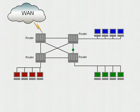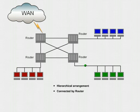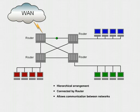By the 1990s, most networks consisted of a simple hierarchical arrangement in which multiple shared media networks were connected by a router. With their sophisticated packet handling, routers allowed communication between networks when necessary, while effectively segmenting traffic so that large shared networks were not overburdened by excessive traffic.